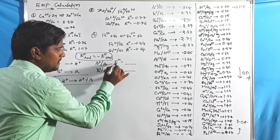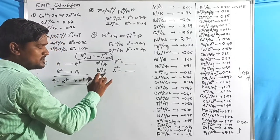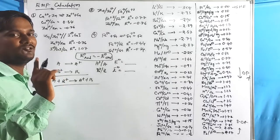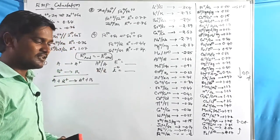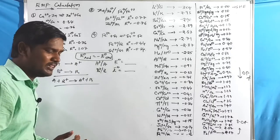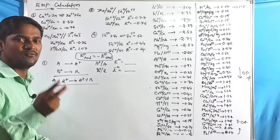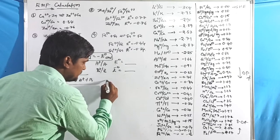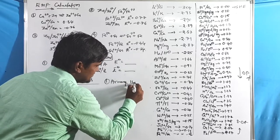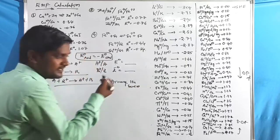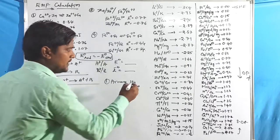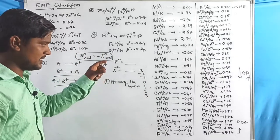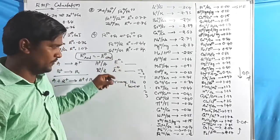Now let's go through the trick. Three points are needed. The first point: arrange the series. Simply arrange the two given values on a number line from negative to positive — for example, −3, −2, −1, 0, 1, 2, 3. Arrange the series of the two given electrode potential values accordingly.